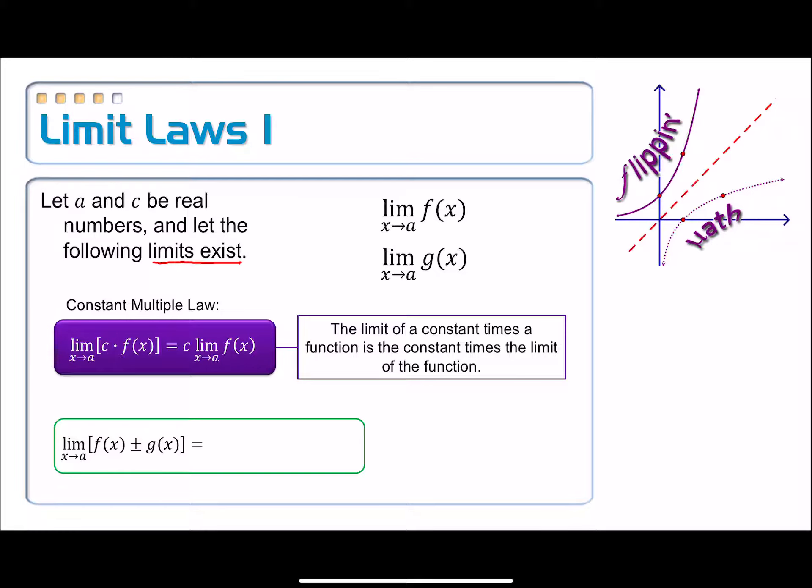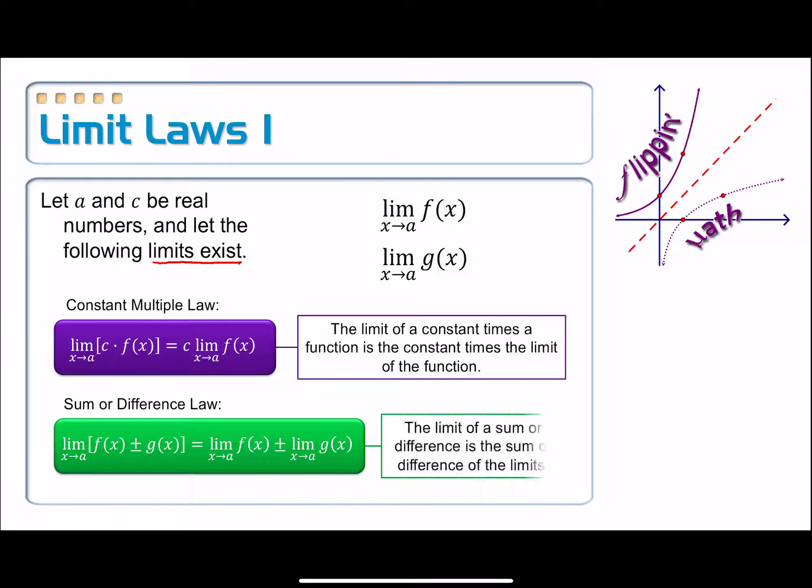In green right down below, we have the limit as x approaches a of f(x) plus or minus g(x). Both of those functions are being added, subtracted. The value of this limit will be equal to, assuming that these limits individually exist, the limit as x approaches a of f(x) plus or minus the limit as x approaches a of g(x). This is the sum or difference law. And it basically means that we're taking the limit of a sum or a difference, assuming those limits exist, that should be equal to the sum or the difference of the individual limits.